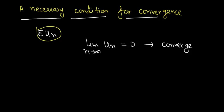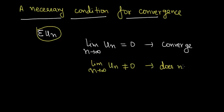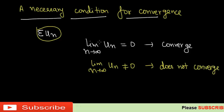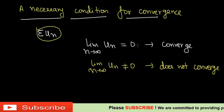If the limit as n tends to infinity of uₙ is not equal to 0, it means the series does not converge. To check convergence, first find the limit as n tends to infinity of uₙ and determine whether it equals 0 or not.